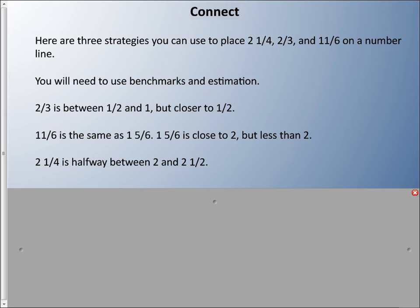We're going to look at how to compare two and a quarter, two-thirds, and eleven sixths. Let me rewrite that to make it a bit clearer: two and one quarter, two-thirds, and eleven sixths. Strategy number one: we can use benchmarks and estimation.